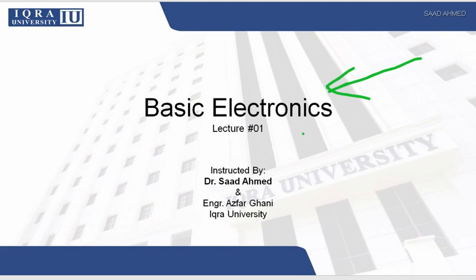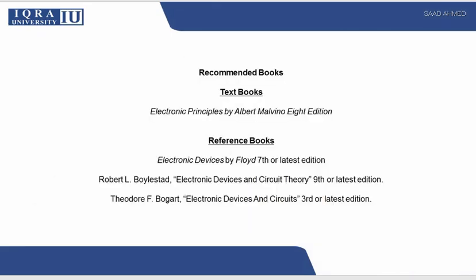So let's start. I'm going to tell you the name of the book which I'm going to use. This is the book, Electronic Principles by Albert Martino, and the edition will be eighth edition. So I want you to get this book. Paper book will be good but if you get a PDF even then it will work.